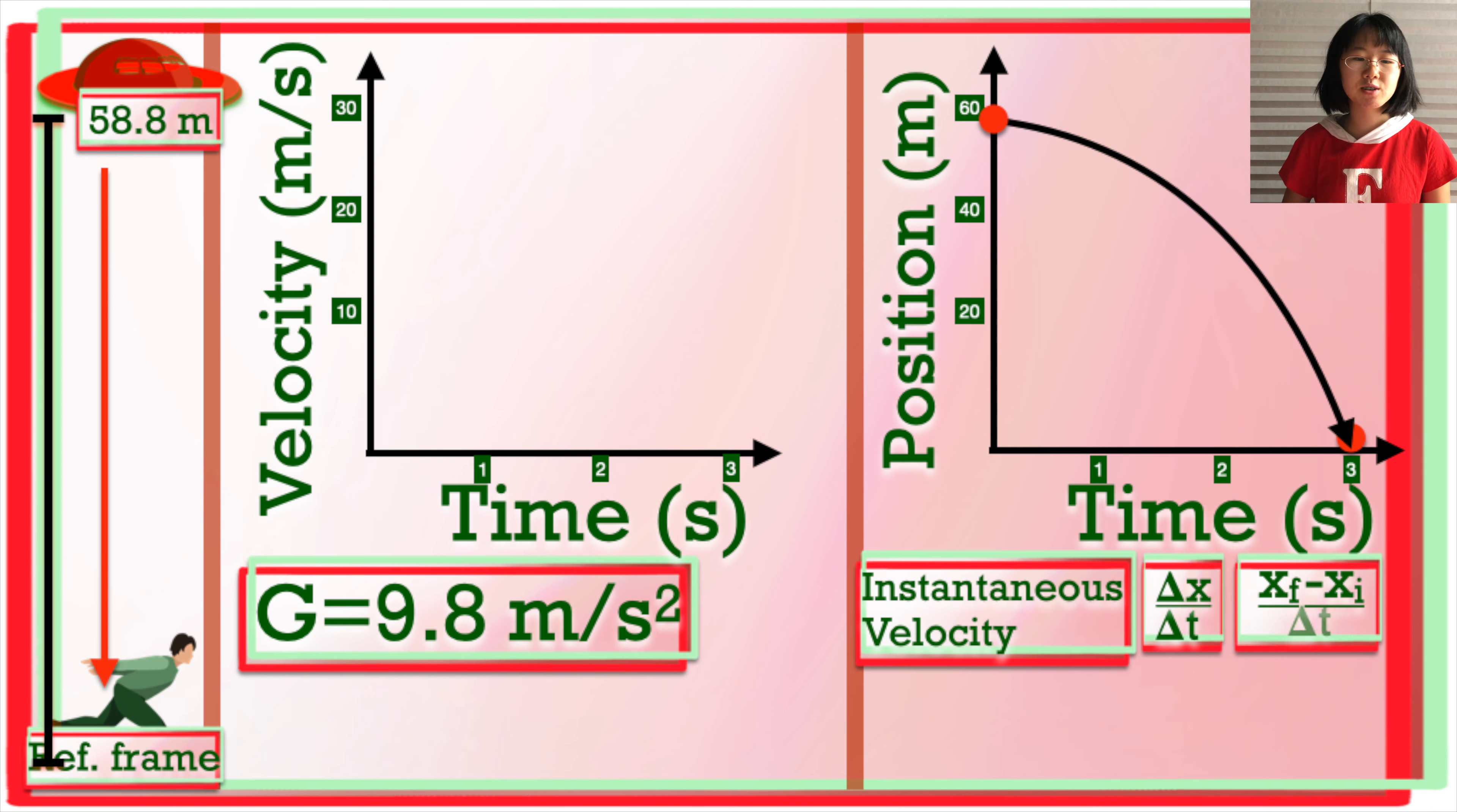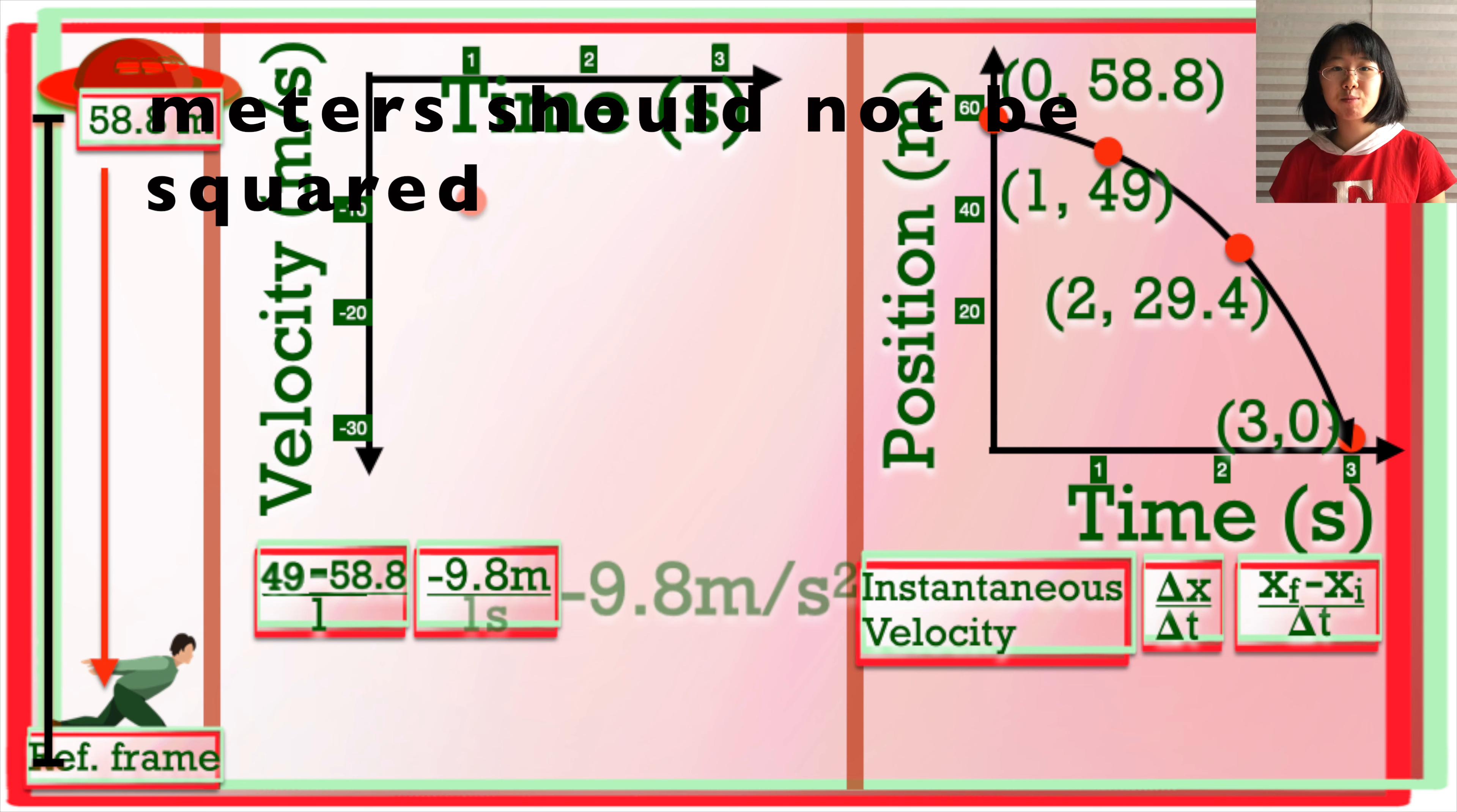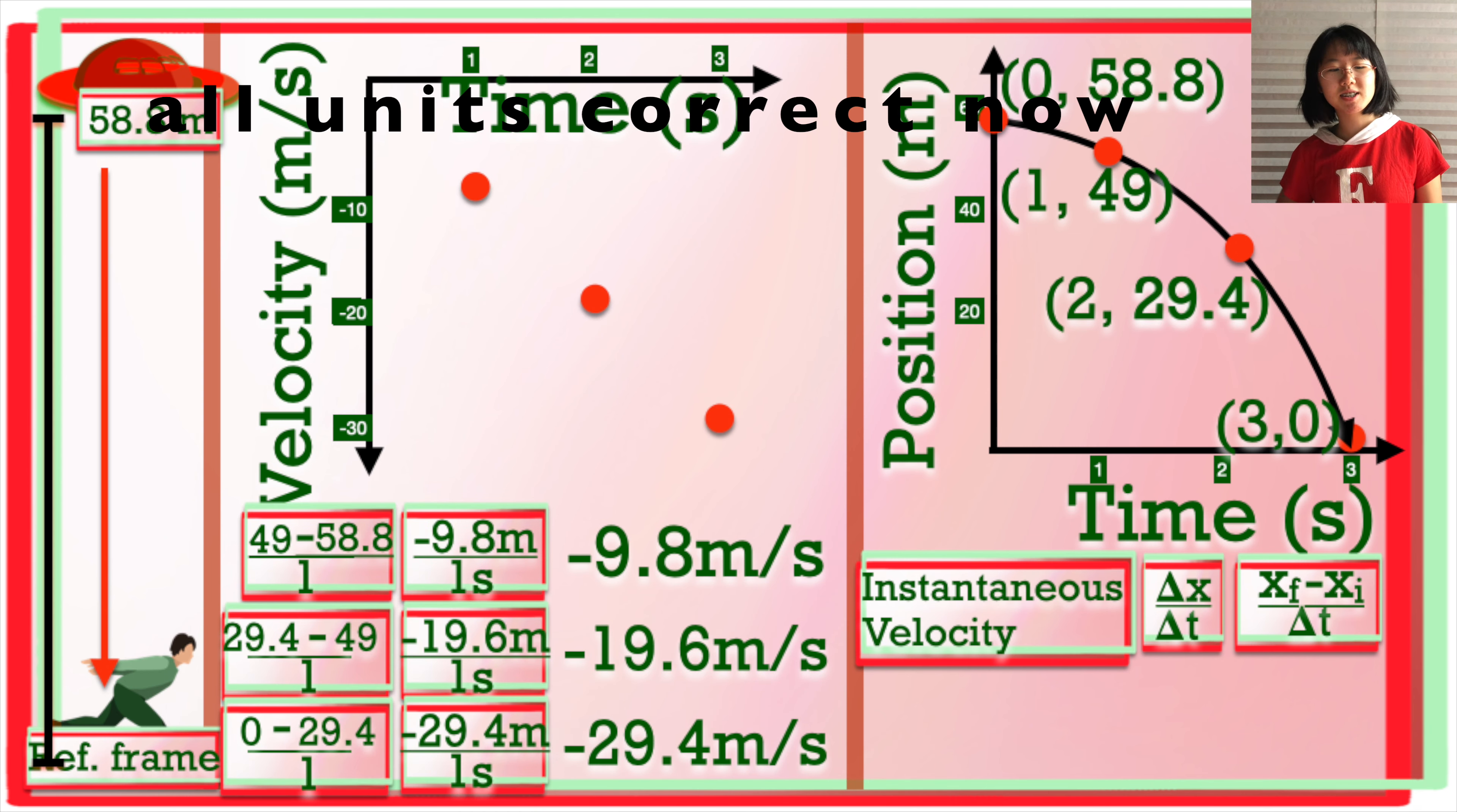So let's take the instantaneous velocities of our position time graph. Final position minus initial position over time. So that's 49 meters minus 58.8 meters is negative 9.8 meters divided by 1 second. Then 29.4 minus 49 is negative 19.6, etc. So we see here that our velocity is a straight line with a slope of negative 9.8.